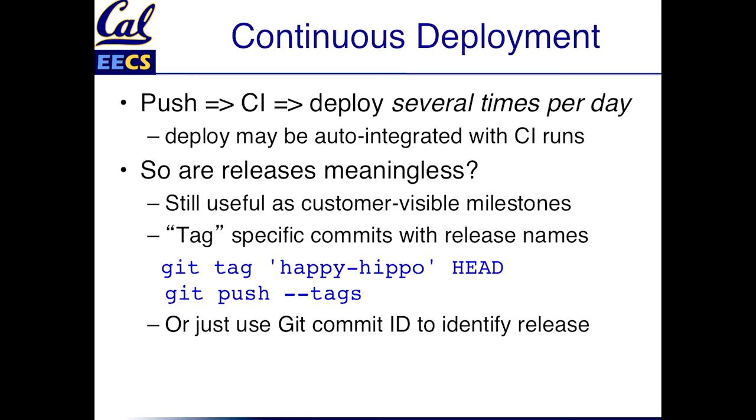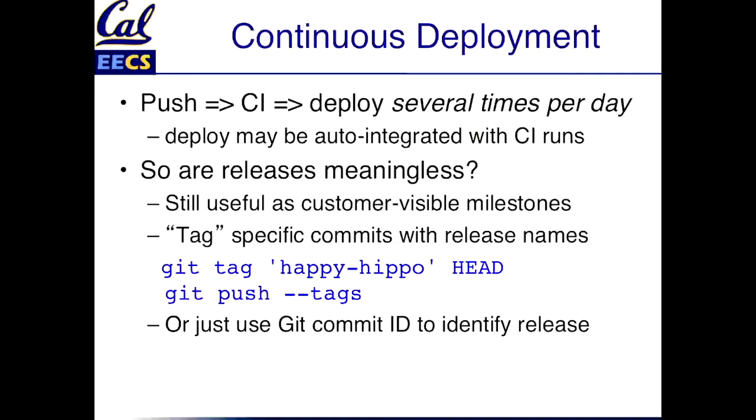You might think this means the concept of a release is not meaningful anymore. But that's not totally true, because really a release is a customer-centric thing — the customer may be expecting some feature or set of features to become available, and there might be quite a bit of work to make those features all function before they're unveiled to the user. So releases are still useful for customer milestones. A lot of sites now tag their official customer releases with cute names like 'happy hippo' or 'itchy iguana.' Or you can just use the git commit ID. You can tag specific snapshots of your app so that only a subset of what you ever pushed is actually marked as a release with a git tag.